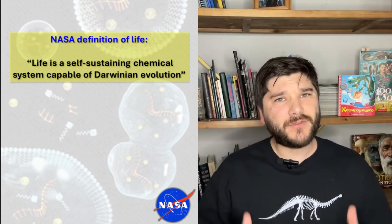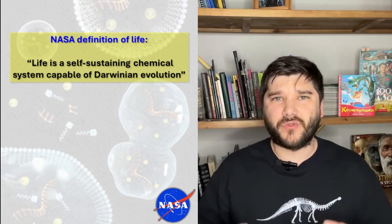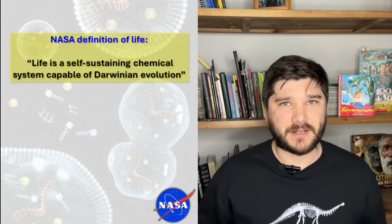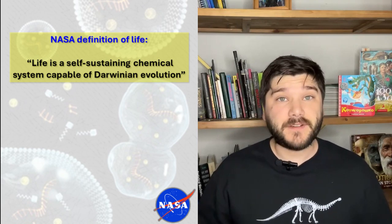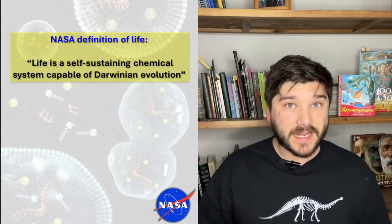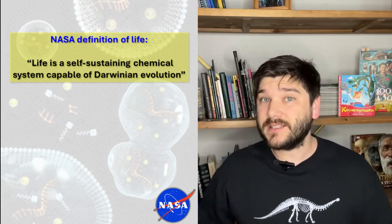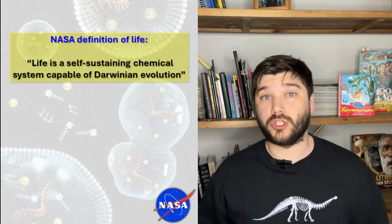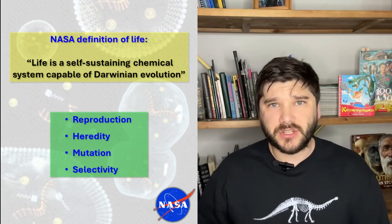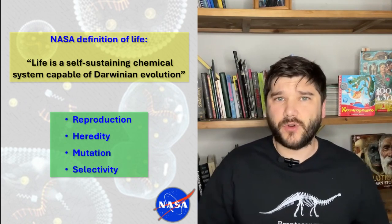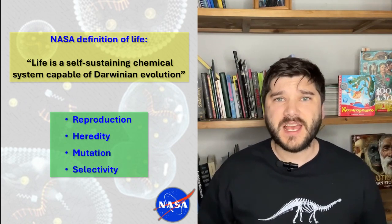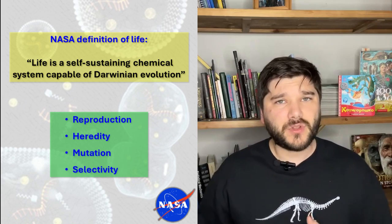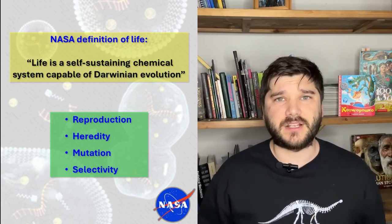I think the best definition of life so far has been provided by NASA. Life is a self-sustaining chemical system capable of Darwinian evolution. Darwinian evolution, in turn, has the following properties: reproduction, heredity, mutation, and selection.